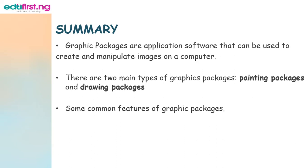In our summary, graphic packages are application software that can be used to create and manipulate images on a computer. There are two main types of graphic packages: painting packages and drawing packages. We gave examples of each, and discussed common features including drawing straight lines and freehand lines, drawing regular shapes such as squares, rectangles, and circles, entering text and changing the style and size of text, coloring, and so on.